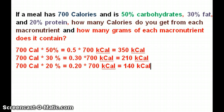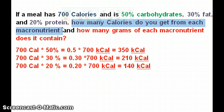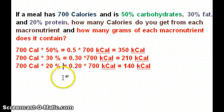So now I know how many calories I get from each nutrient and that it adds up to 700: 350 plus 210 plus 140. On the test it might skip this middle section — the test is going to test whether you can figure things out and do critical thinking.